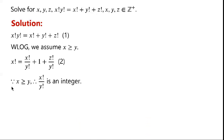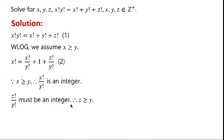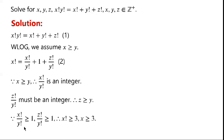Because x is greater than or equal to y, x factorial over y factorial is an integer. Then z factorial over y factorial must also be an integer, so z must be greater than or equal to y. Because x factorial over y factorial is greater than or equal to 1 and z factorial over y factorial is greater than or equal to 1, from equation 2 we can see that x factorial is greater than or equal to 3, which means x must be greater than or equal to 3.